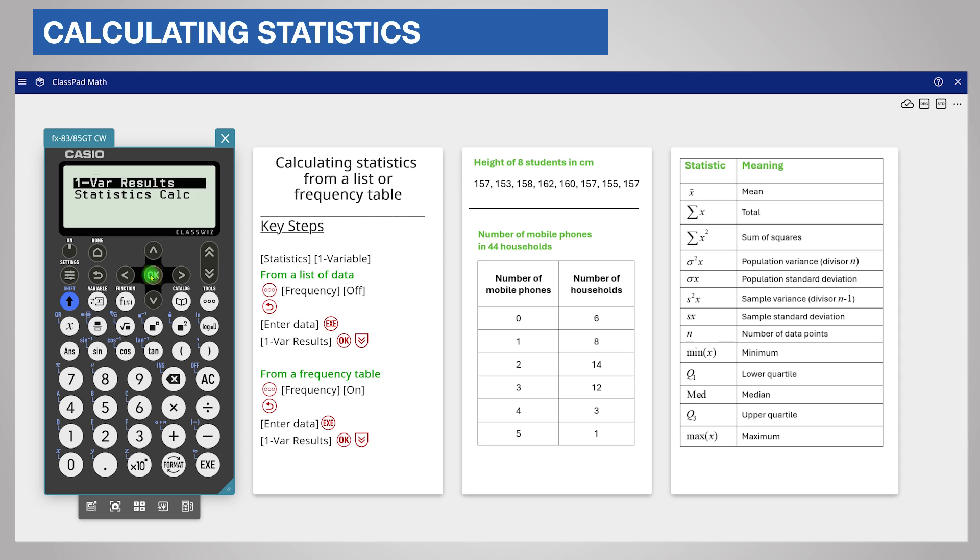Choose One Variable Results. The top line is labeled X bar. This is the mean and is 157.375. Underneath there are various calculated values including standard deviation. To see the quartiles, press Page Down and you can see the number of values n, the minimum value, and also the first, second, and third quartiles. Pressing Page Down again shows the maximum.